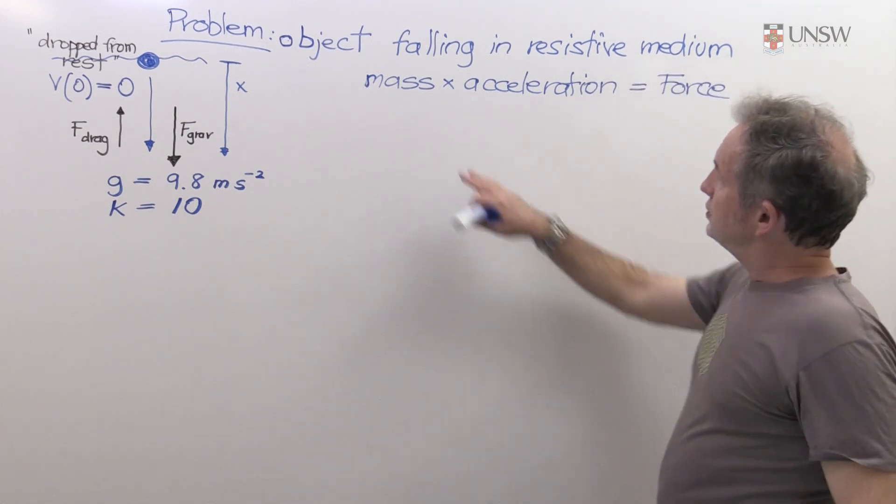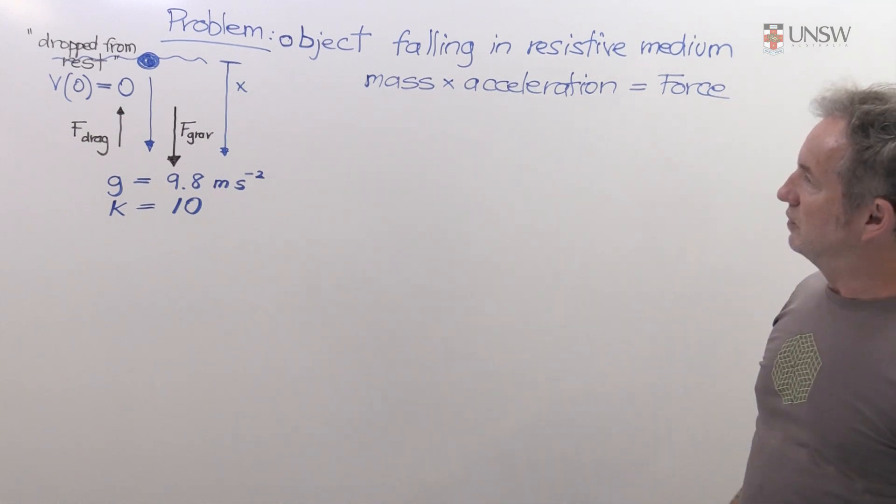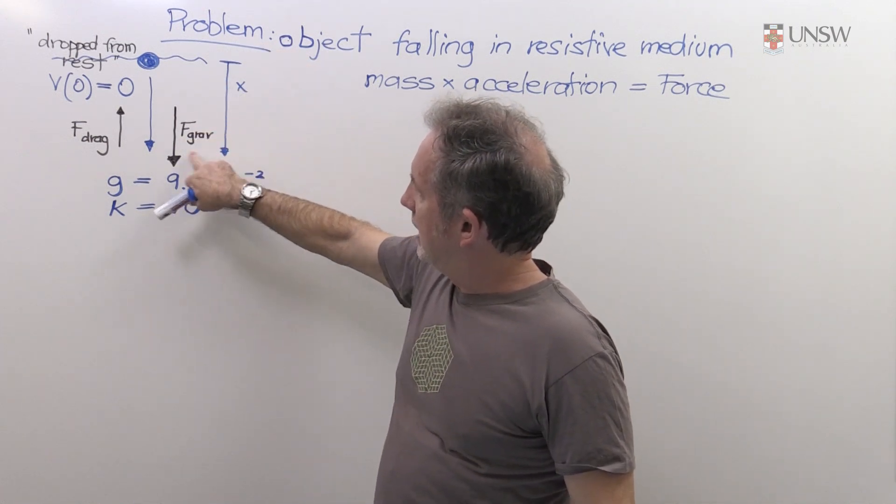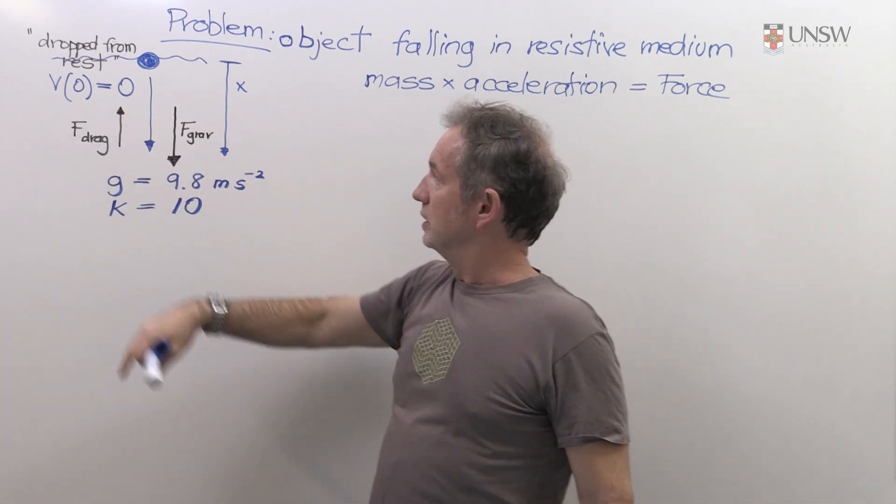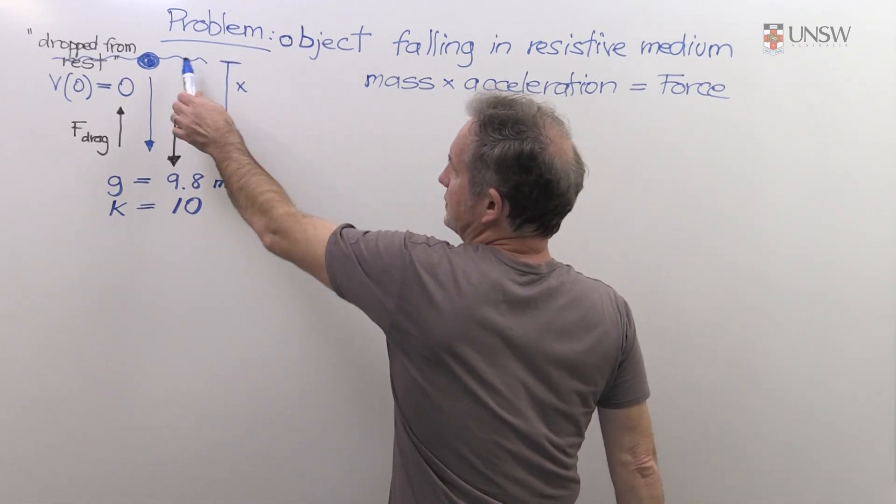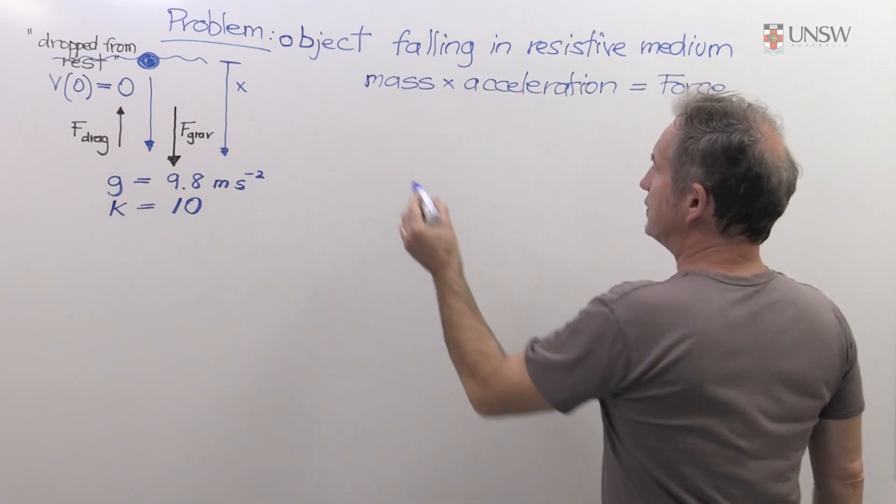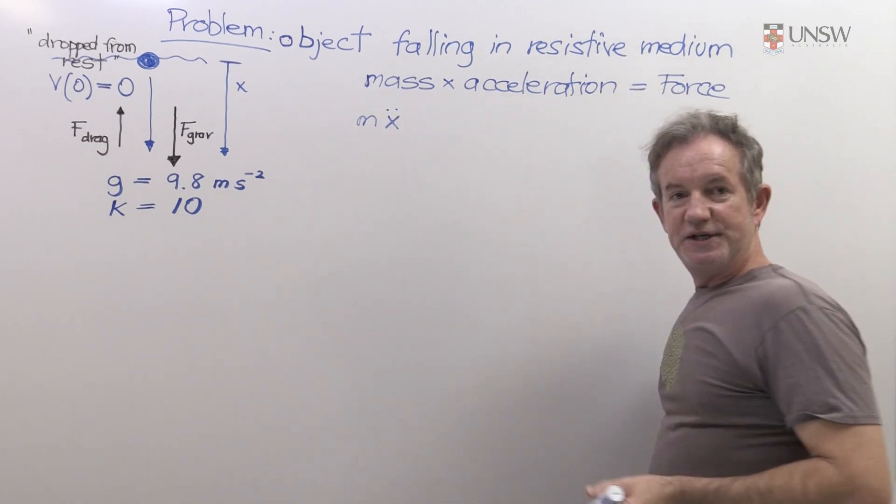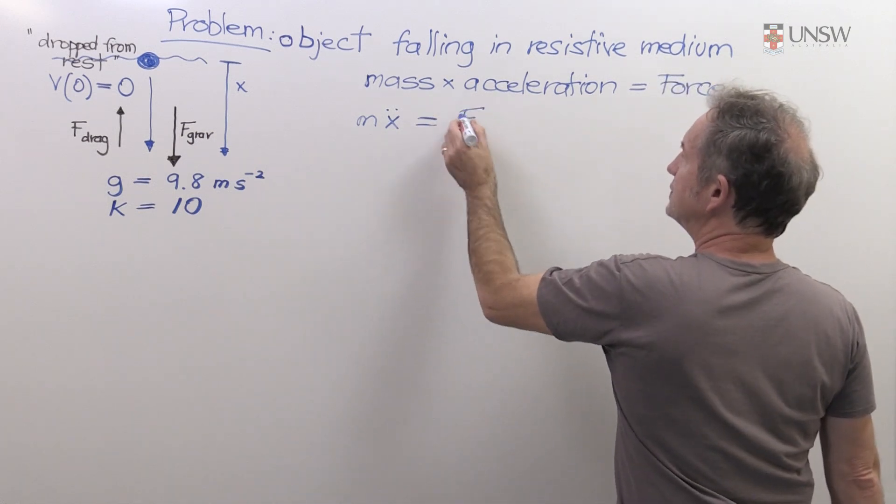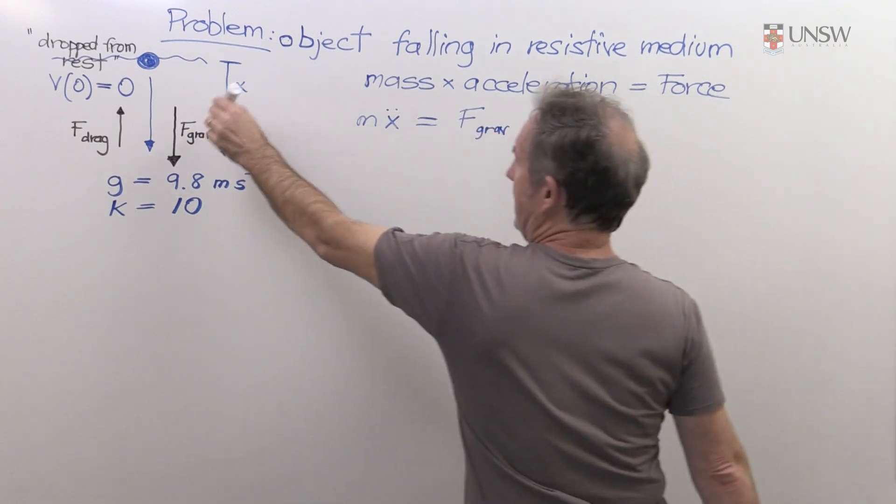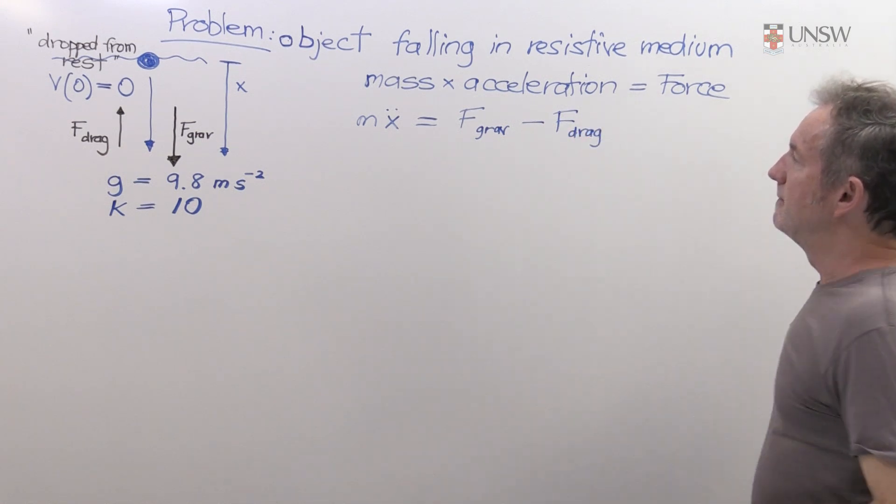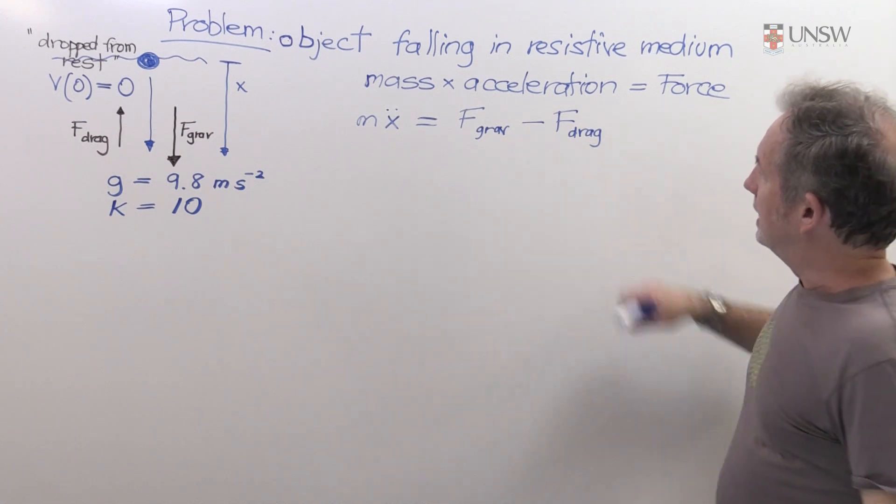The Newtonian prescription for making your model is the mass times the acceleration equals the force. So you have to identify the forces on the body, which I have: gravity acting down, drag acting in the opposite direction to which the body is going. And I've set up a coordinate system x measured positive from the surface of the water going down. So the mass times the acceleration, acceleration is the second derivative of position. And now I have to identify the forces and write them with the right signs. F_grav is down, which is the same as the positive x direction. And then I've got my drag force.